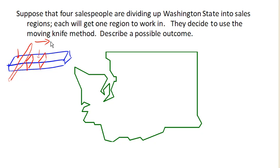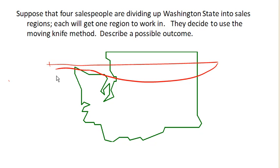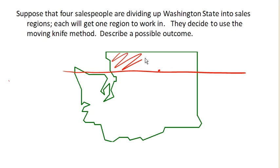So let's imagine our four salespeople doing the same thing. We're going to imagine a big virtual knife cutting the state of Washington horizontally. We start moving the knife down the line, and at some point somebody's going to yell 'stop.' From that, we slice the state and all of that piece goes to the first person who yelled stop, which was Henry.